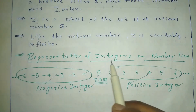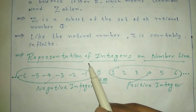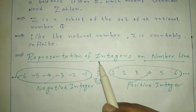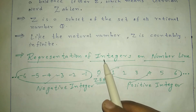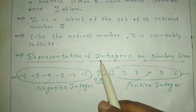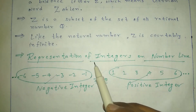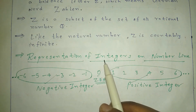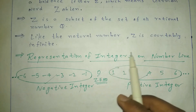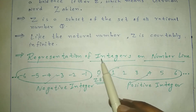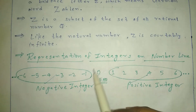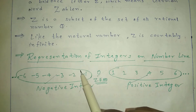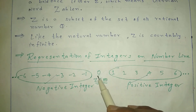Like the natural numbers, Z is countably infinite. As we know, natural numbers start from 1 and go infinitely, so Z is also infinite. Now let's see a representation of integers on a number line.